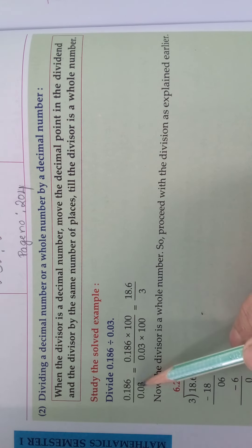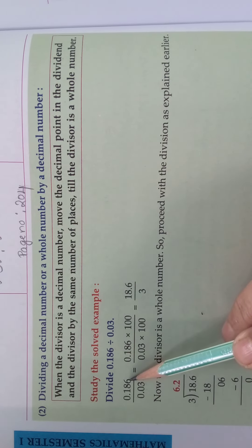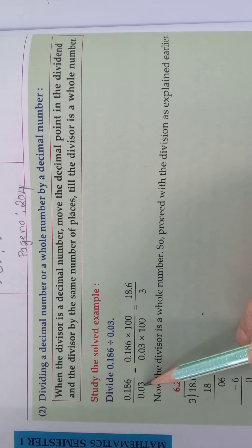So the decimal part, how many parts are there? One, two. So we should move it to two places. See here in the dividend, 0.186. So make this number to whole number. What we should do? What you should do?